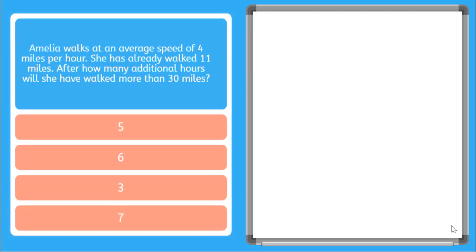So this one says, Amelia walks an average speed of 4 miles per hour. She has already walked 11 miles. After how many additional hours will she have walked more than 30 miles?